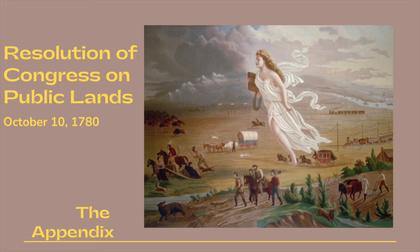Many of these titles were conflicting and uncertain, and there was a widespread feeling, especially in those states that did not have title to western lands, that these lands should be surrendered to the central government. Congress, by the Resolution of October 10, 1780, dictated the policy which it would follow towards any lands ceded to it by the states.